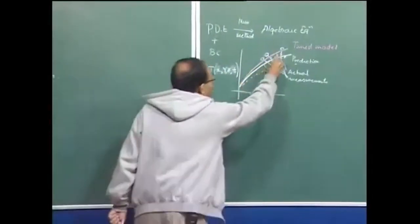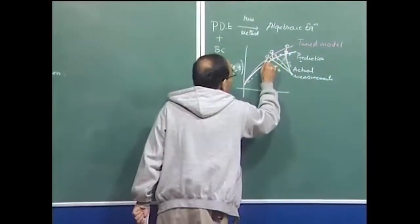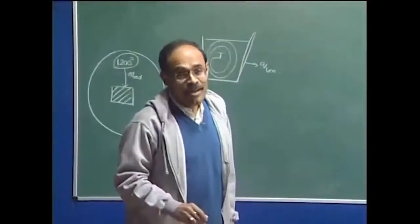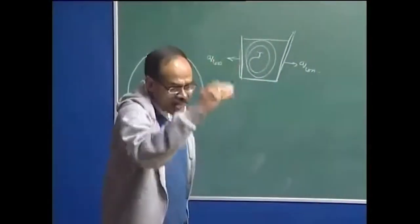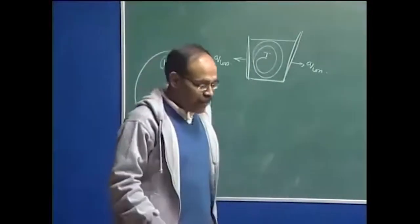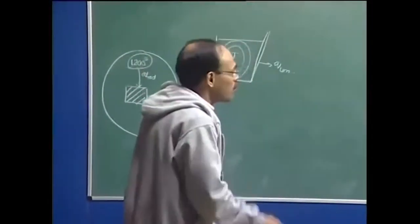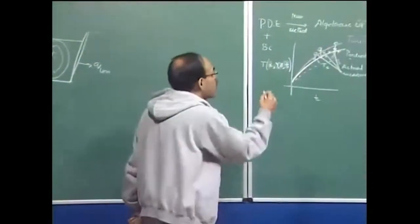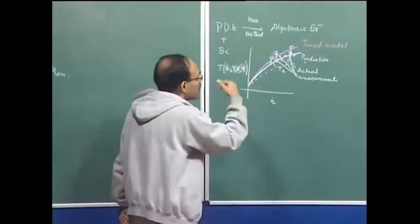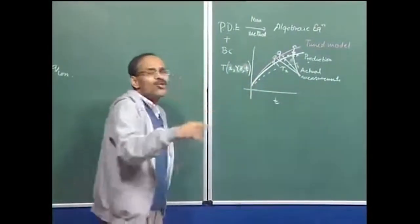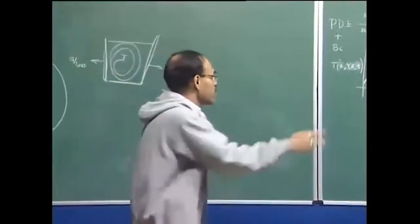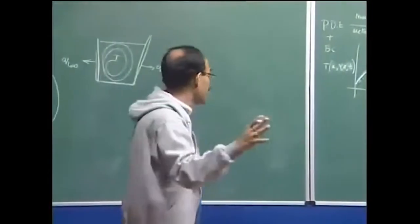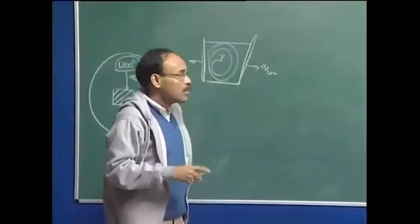We must understand also that numerical methods are also prone to some error. But eventually, when you hit the grid-independent solution, that can be set aside because grid-independent solutions have to be identical. However, certain numerical techniques, if you do not take precautions, can give erroneous results. So numerical error is also one reason, and we have to have a robust numerical method in order to derive solutions from the governing equation.